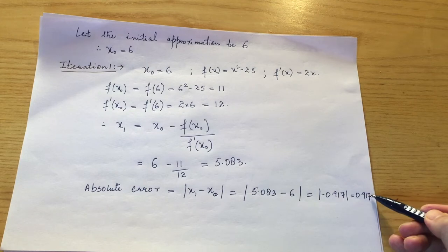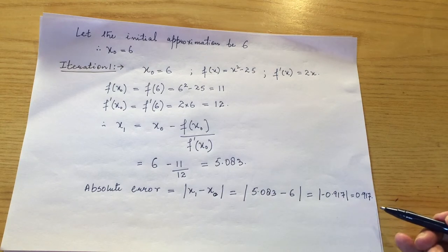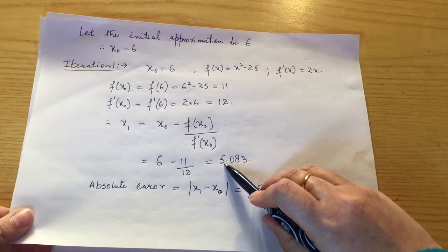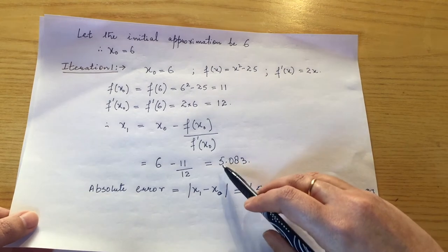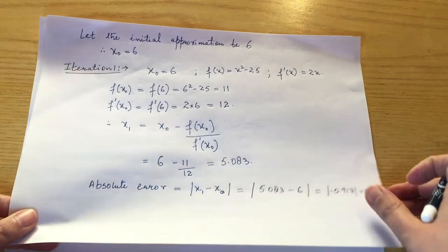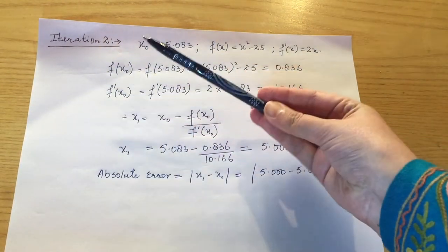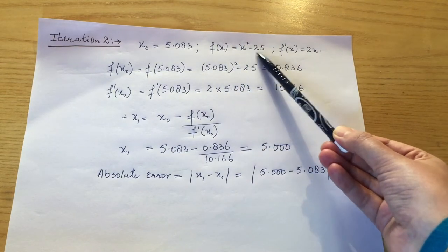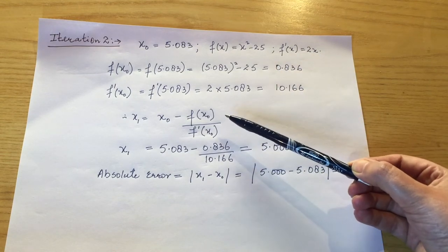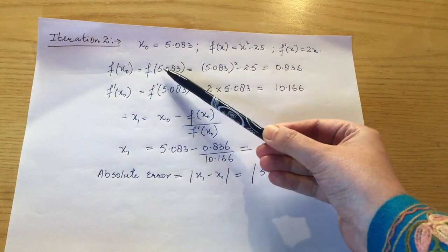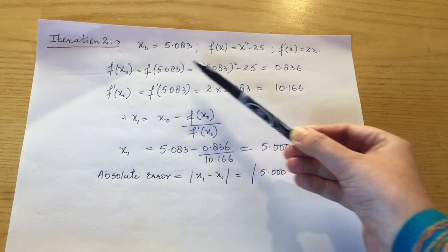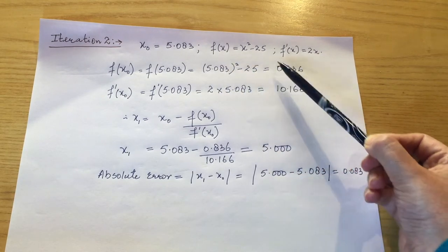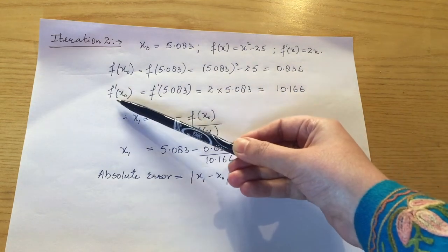The error is 0.917, so we move to iteration 2 to reduce it. In iteration 2, x₀ = 5.083. With f(x) = x² - 25, we calculate f(x₀) = f(5.083) = 5.083² - 25 = 0.836.